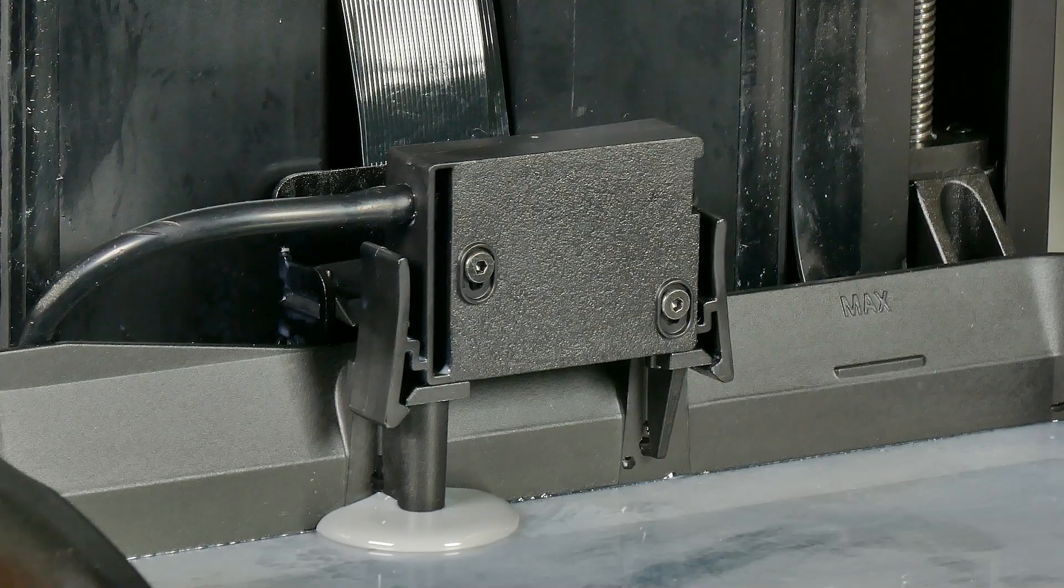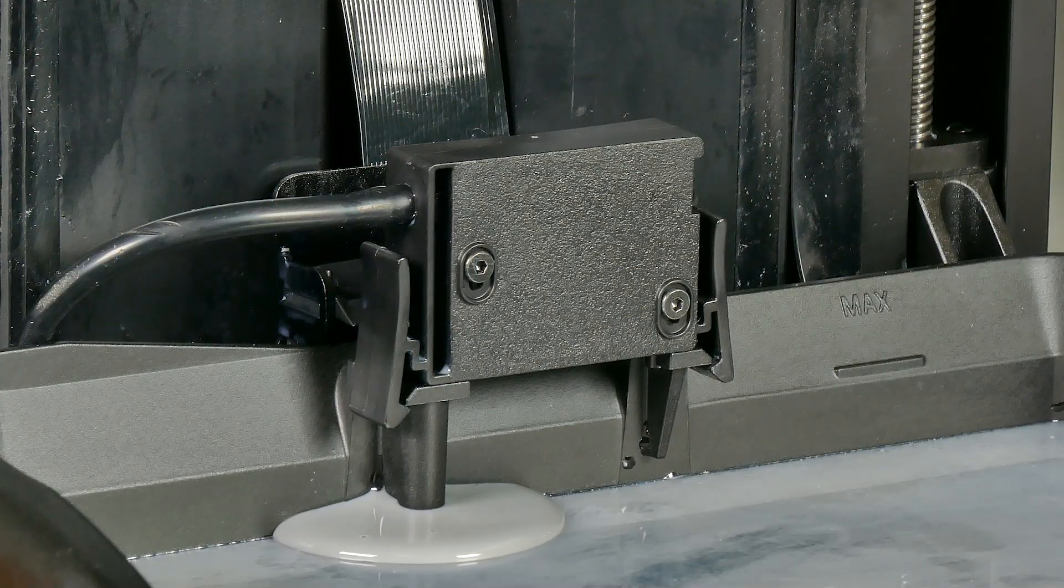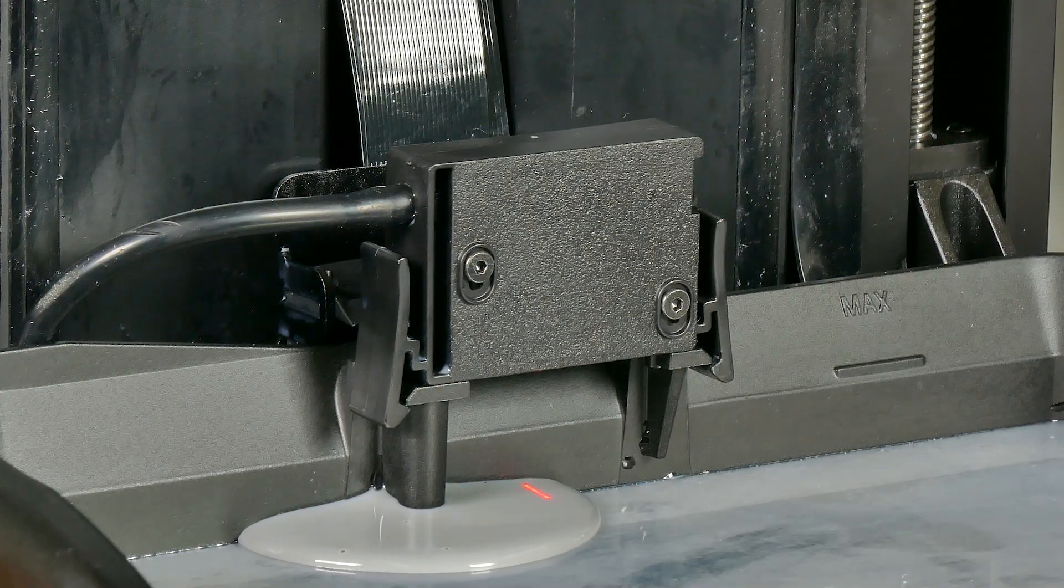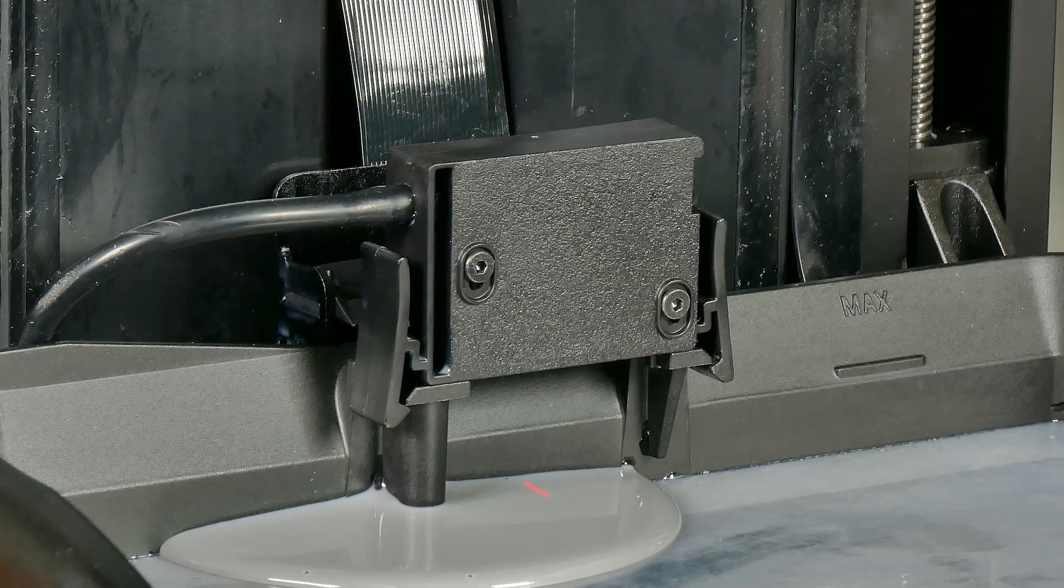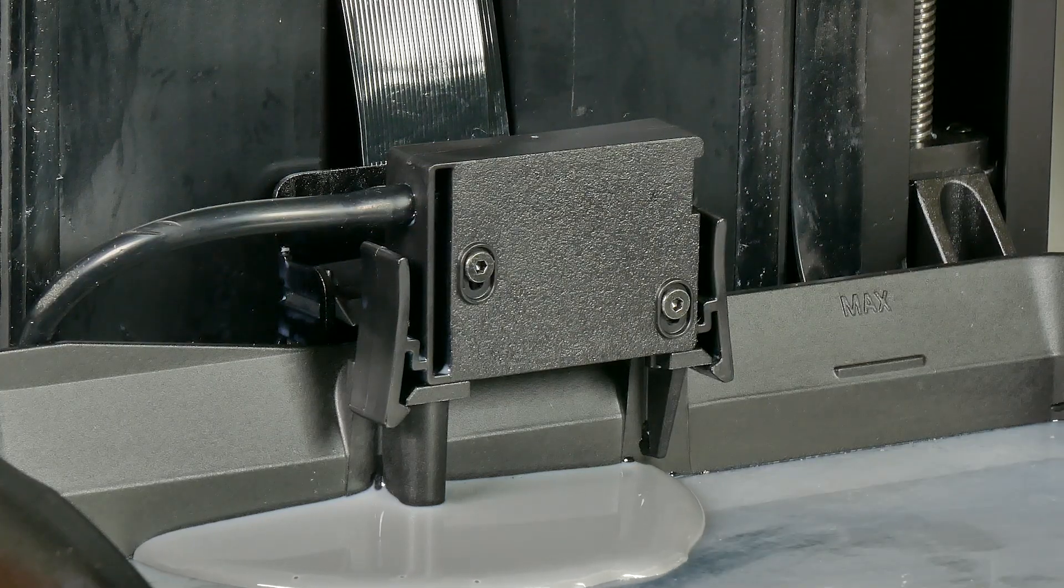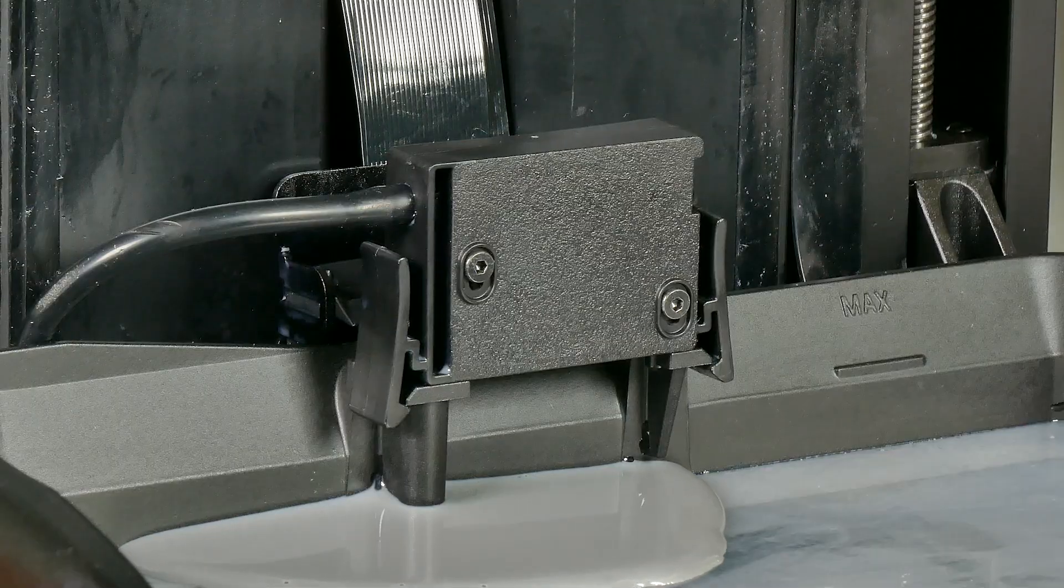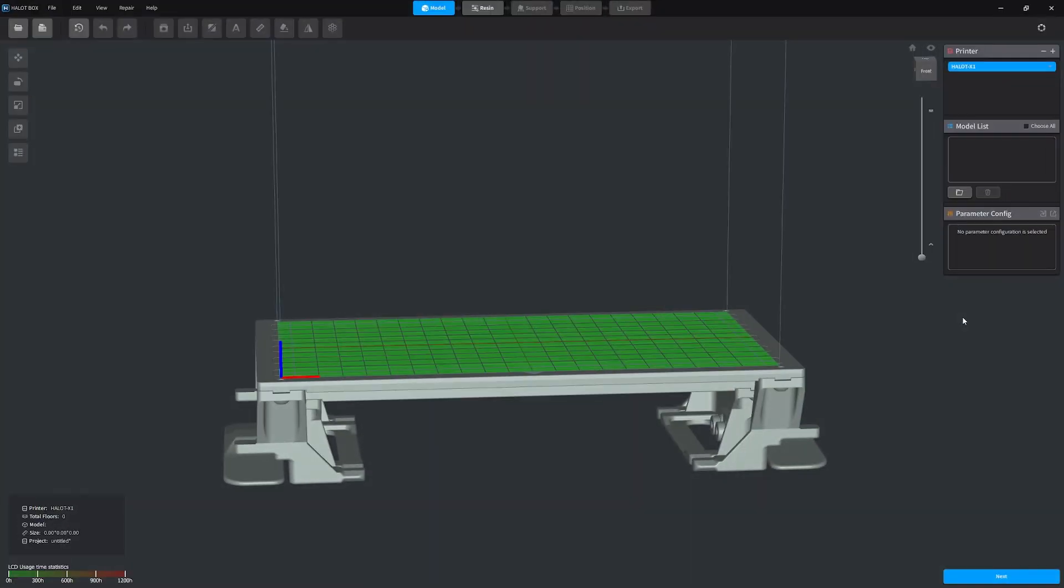Now you see that little laser pulse beam there. What it's doing is measuring the height of that resin. So it's working out the volume, and when it gets to a certain height it will automatically stop filling. So while that's filling let's go and check out the software.